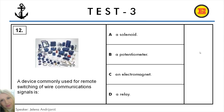Question number 12. A device commonly used for remote switching of wire communication signals is: A: A solenoid, B: A potentiometer, C: An electromagnet, D: A relay. And the correct answer is D: A relay.